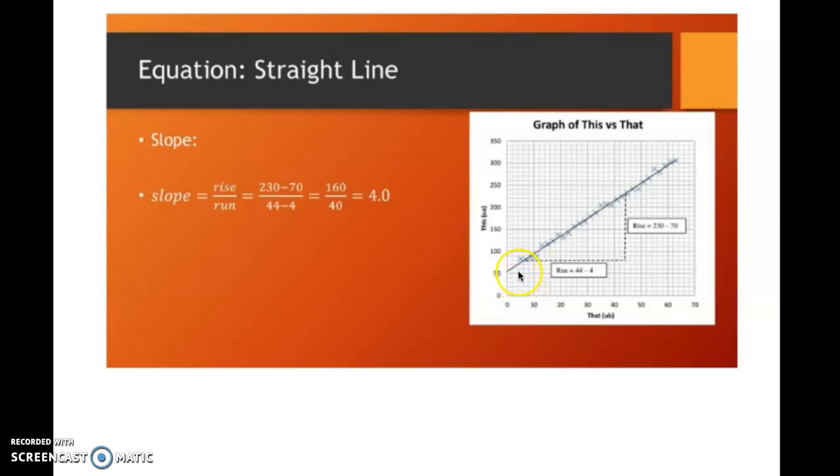And now we need to find the run which is 44 minus 4. That gives us 160 divided by 40 which gives us a final slope of 4.